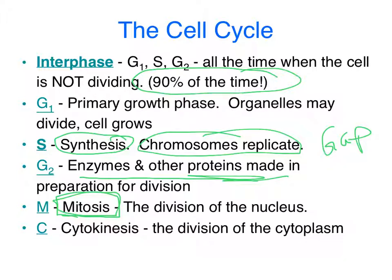Mitosis is only a small part of the cell cycle, but it does have its own stages. Then the cell cycle will culminate with cytokinesis — the actual division of the cytoplasm to prepare two new daughter cells.